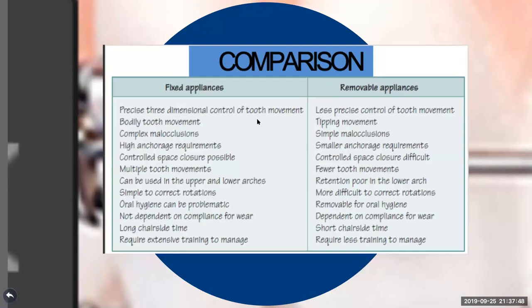Removable appliances give less precise control of tooth movement, but fixed appliances provide very precise, three-dimensional control. With fixed appliances, we can do bodily tooth movement and treat complex malocclusions. Removable appliances can only treat simple malocclusions, though they are cheaper. Regarding anchorage, removable appliances require less anchorage because they can only provide tipping movement, whereas fixed appliances can execute complex movements including bodily tooth movement and root uprighting.